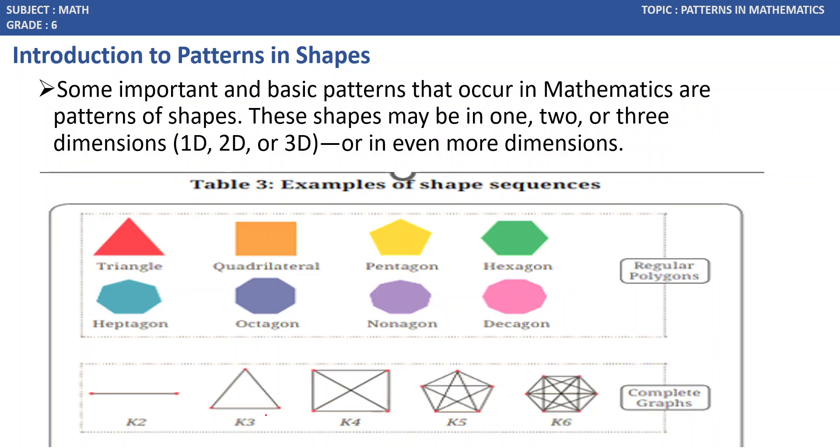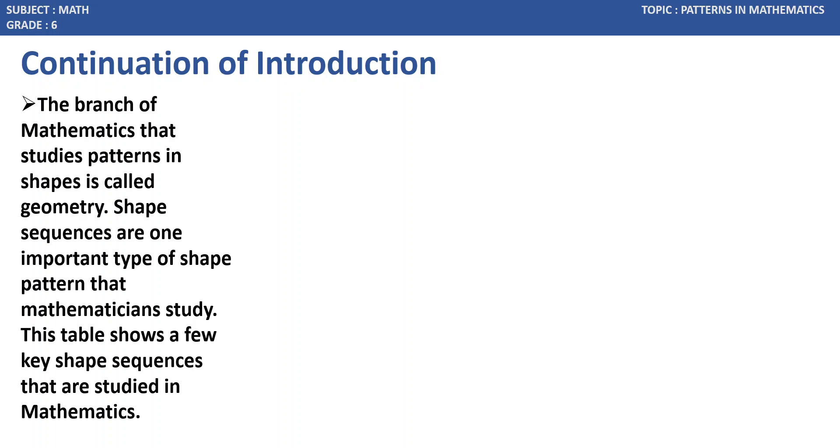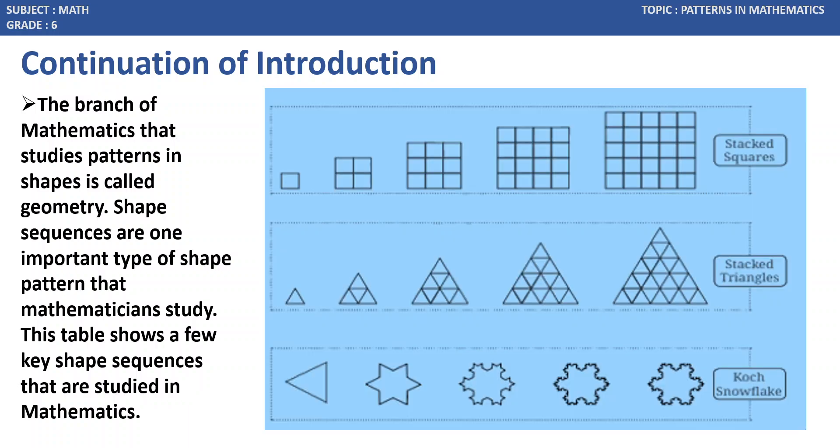These are complete graphs which were represented as K3, K4, K5, K6. The branch of mathematics that studies patterns and shapes is called geometry. Shape sequences are one important type of shape pattern that mathematicians study. This table shows a few key shape sequences that are studied in mathematics.